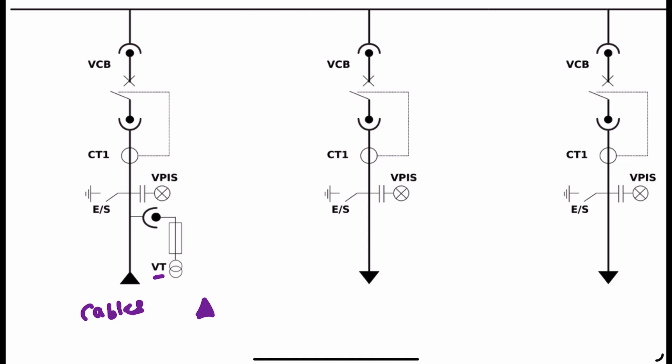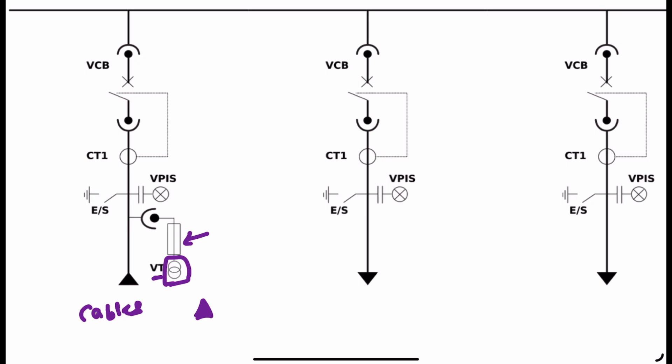Once we connect the cable, you can see we have connected a voltage transformer, which will help us in measuring the incoming supply voltage — whether the supply voltage is within the tolerance limit or not, or if it is fluctuating too much. That information we get from this voltage transformer. It also helps us provide protection when needed.